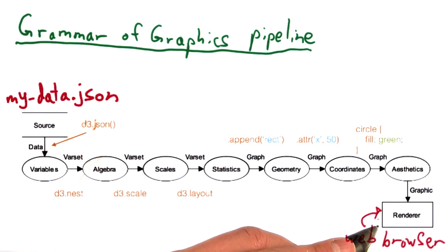In D3's case, the renderer is simply the web browser, and the browser displays the final graphic in the form of a web page.